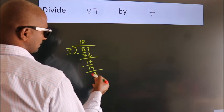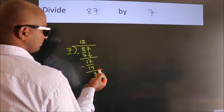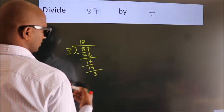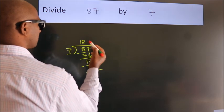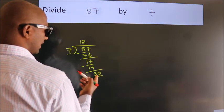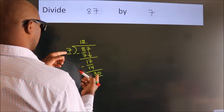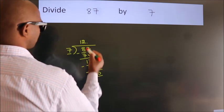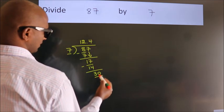After this, no more numbers to bring it down. So what we do is we put dot take 0. So 30. A number close to 30 in 7 table is 7 fourths 28.